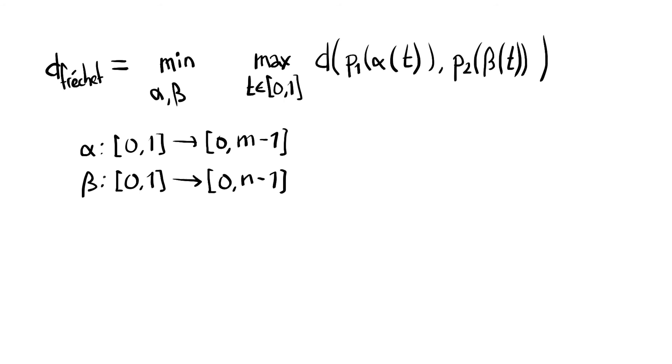Well let's start with a basic one first. We want alpha of 0 to equal beta of 0 to equal zero because we should start at the beginning of each polyline. Similarly alpha of 1 and beta of 1 should be m minus 1 or m minus 1 and n minus 1 if my polylines have different length. Because I need to get to the end of the polyline.